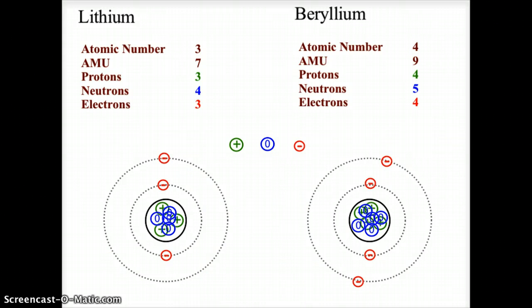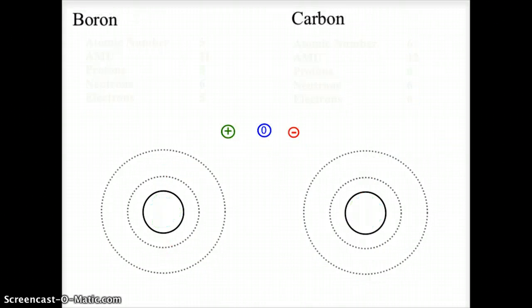We're going to go ahead and do boron and carbon. I'm going to ask you to draw these on a separate sheet of paper and build these atoms yourself. Then come back and check how you did. Go ahead and turn off the video now, and we'll see you in a little bit.